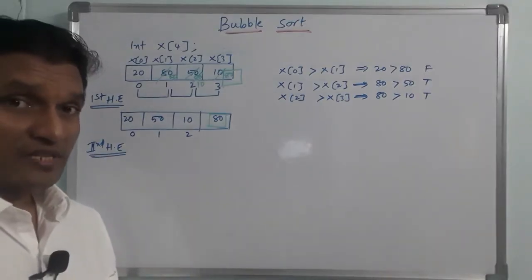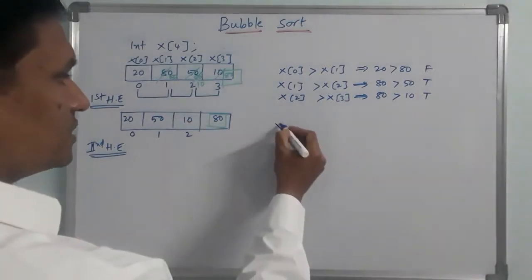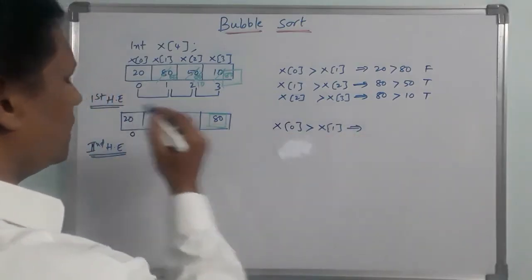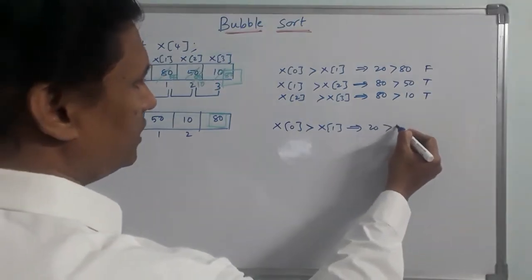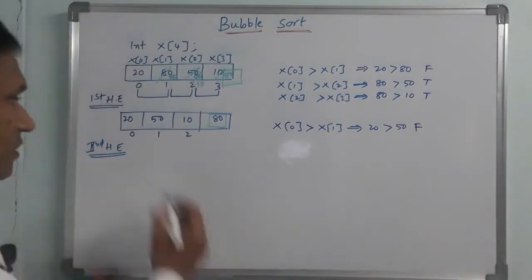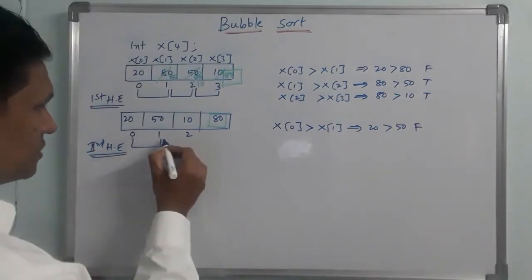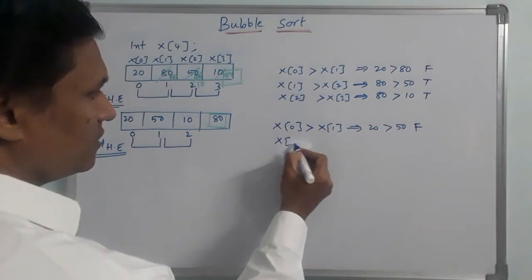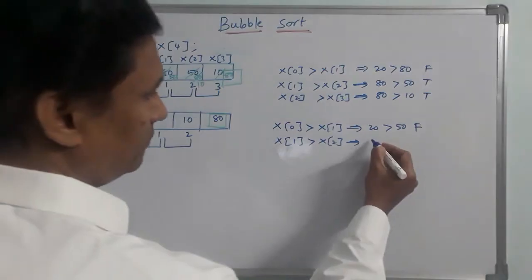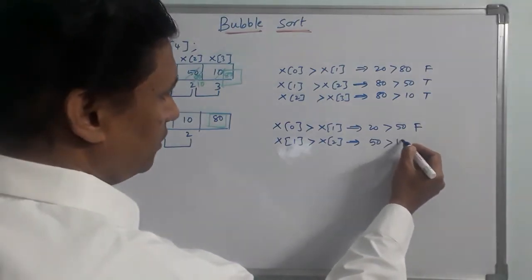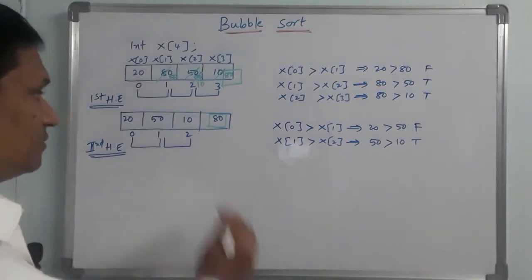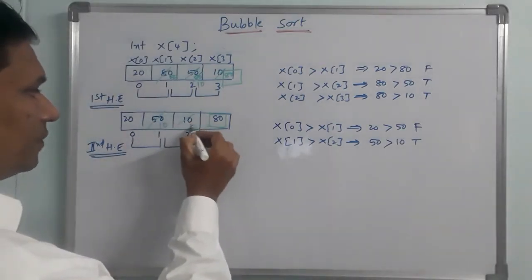In the second pass, we compare x[0] with x[1]. x[0] is 20, and x[1] is 50. Is 20 greater than 50? The condition is false, so no interchange. Next, we compare x[1] with x[2]. x[1] is 50 and x[2] is 10. The condition is true, so we interchange — 10 and 50 swap positions.